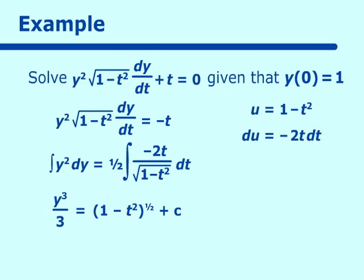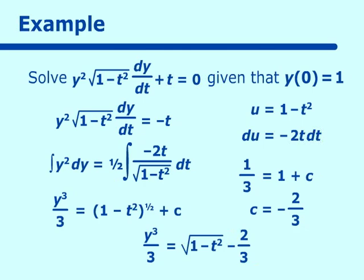Now applying the initial condition y(0) = 1: substituting gives 1/3 = √(1 - 0) + c = 1 + c, so c = -2/3. Our final answer is y³/3 = √(1 - t²) - 2/3.